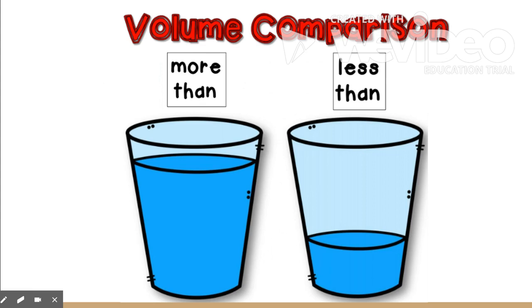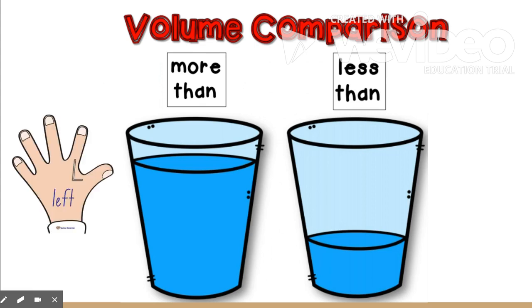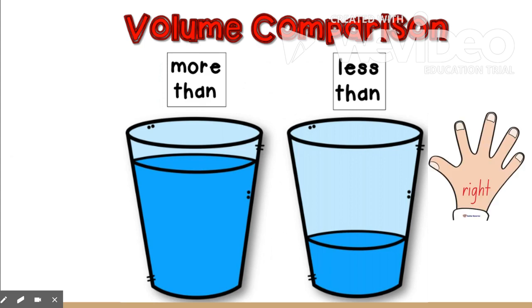For example, the glass on my left has more water than the glass on my right. And the glass on my right has less than the glass on the left.